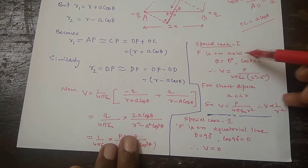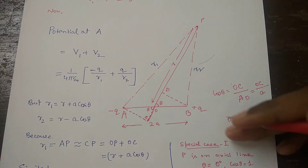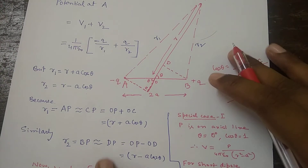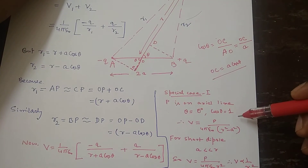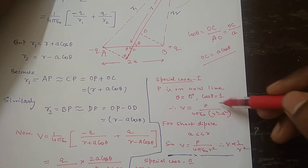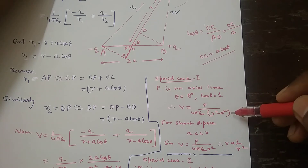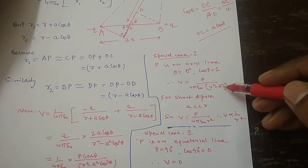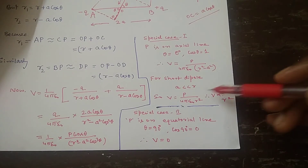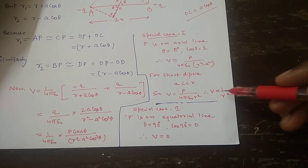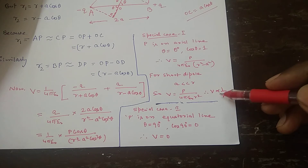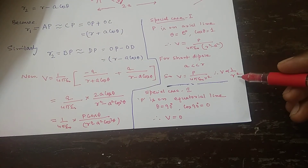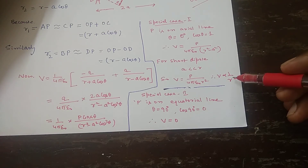Special case 1: if point P is on the axial line, then theta equals 0 degrees. Putting theta equal to 0 gives cos theta equal to 1. On substituting, V equals P divided by 4 pi epsilon naught times (R squared minus A squared). For a short dipole, A is very small and can be neglected, giving V proportional to 1 over R squared. So for a dipole, the potential is inversely proportional to the square of the distance, unlike a point charge where it is inversely proportional to R.